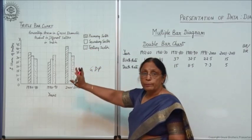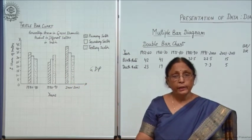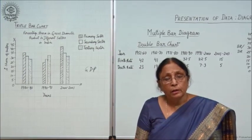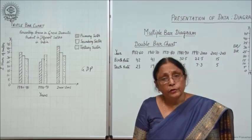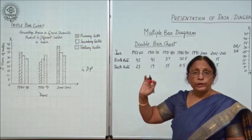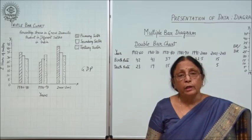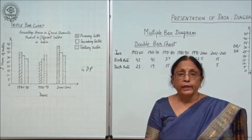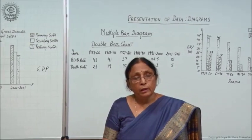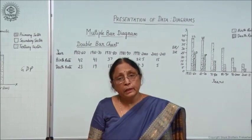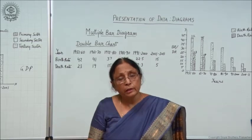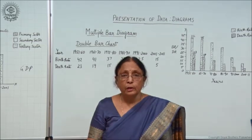So this is the triple bar chart. I told you what is simple bar, double bar, and triple bar. This type of data distribution can be shown with any of these three types depending on the data given. If only one variable is given, draw a simple bar. If two variables are there, draw a double bar chart. If three variables are there, draw a triple bar chart.